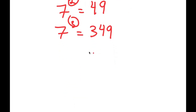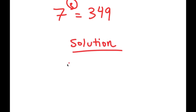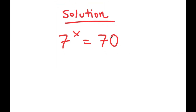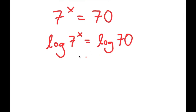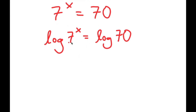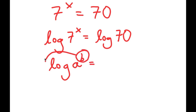Now to actually solve for x. My equation is 7 to the power of x is equal to 70. What I recommend doing for any exponential equation like this is taking the log on both sides. The reason you should do this is because you can use the property: log of a to the power of b equals b times log a.